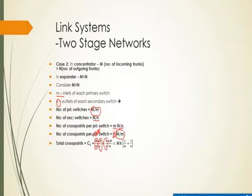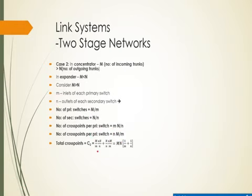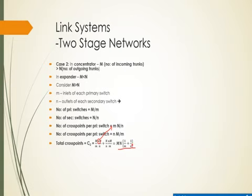The total number of cross points C2 is given by the equation: M/m times the cross points per primary switch, plus N/n times the cross points per secondary switch. After correcting a typo — the second term should be m times N divided by n — this simplifies to C2 = M·N·(1/m + 1/n). This is the total cross point count for the two-stage network.